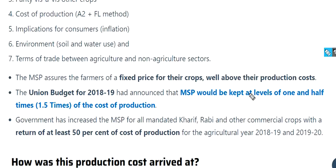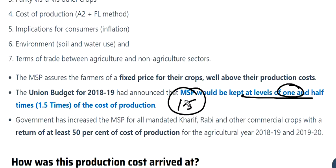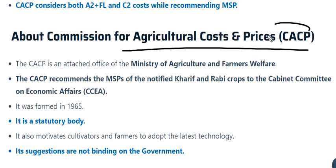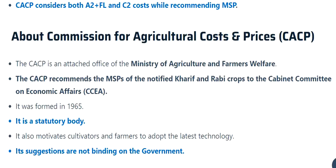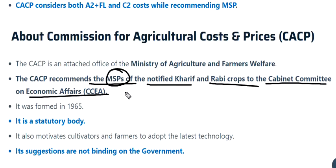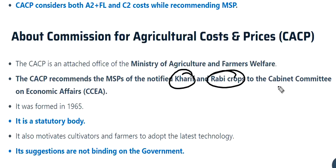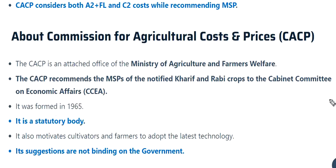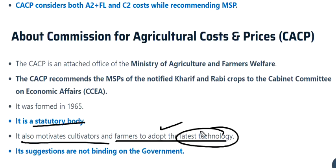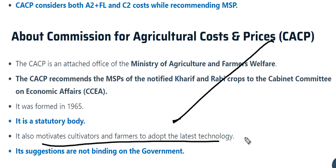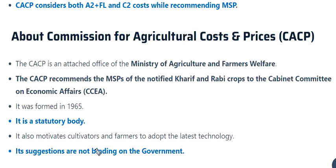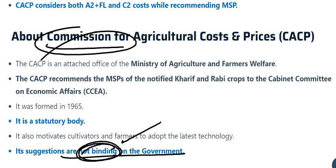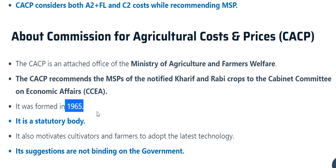In the 2018-19 budget, MSP was capped at 1.5 times the cost of production. CACP — Commission for Agriculture Cost and Prices — is an attached office of the Ministry of Agriculture and Farmers' Welfare. It recommends MSP for notified Kharif and Rabi crops to the Cabinet Committee on Economic Affairs. CACP was created in 1965 and is a statutory body. It also motivates cultivators and farmers to adopt the latest technology. However, its suggestions are not binding on the government.